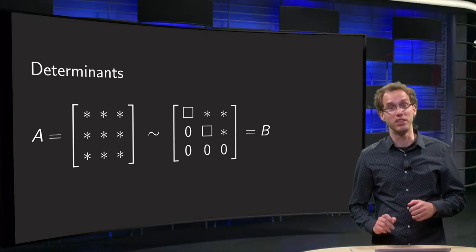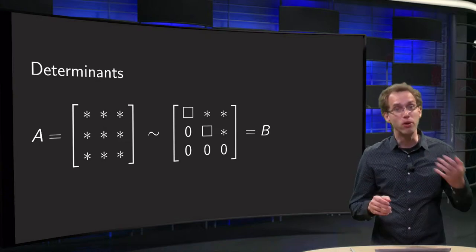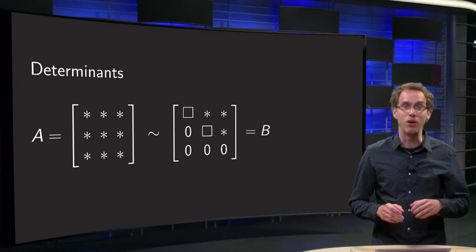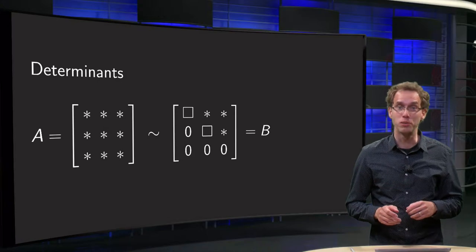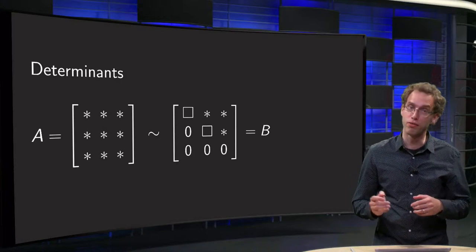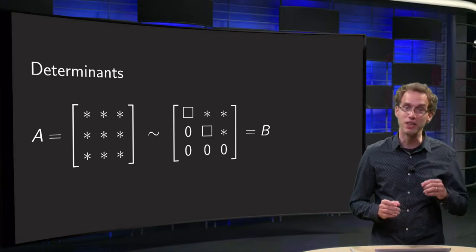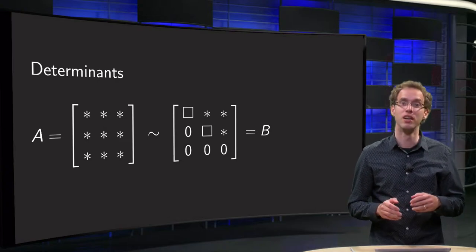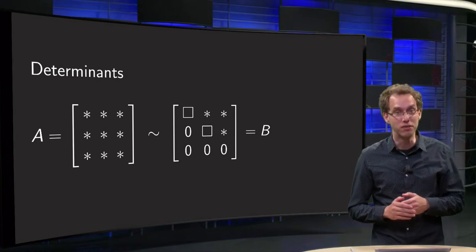We know that a 2 by 2 matrix is invertible if and only if the determinant is non-zero. Now we know how to compute determinants of larger matrices and have already seen a few properties. That means we are now ready to show that the same rule also holds for larger matrices. We will see that in this video.